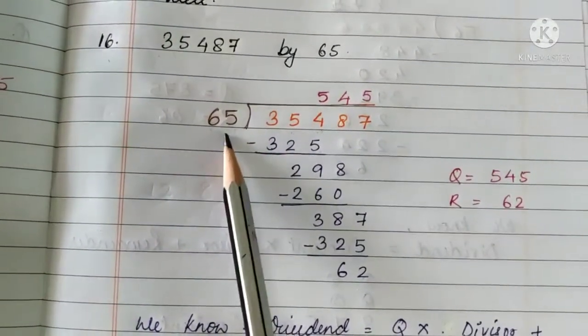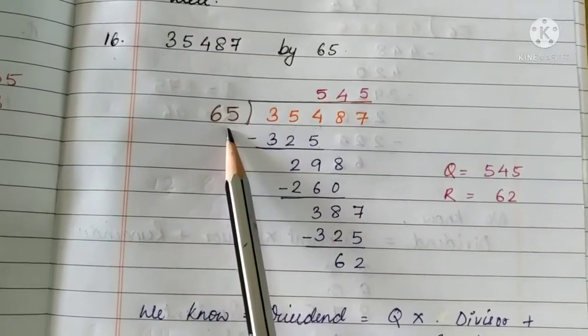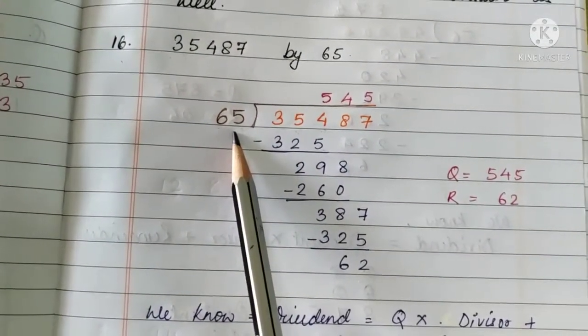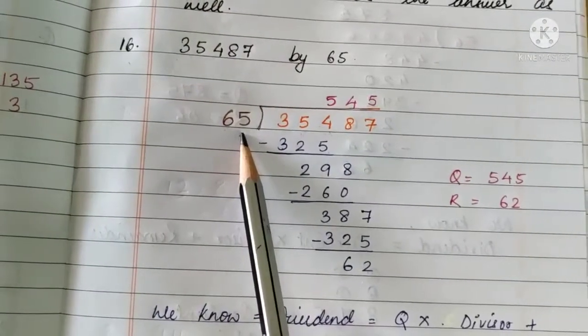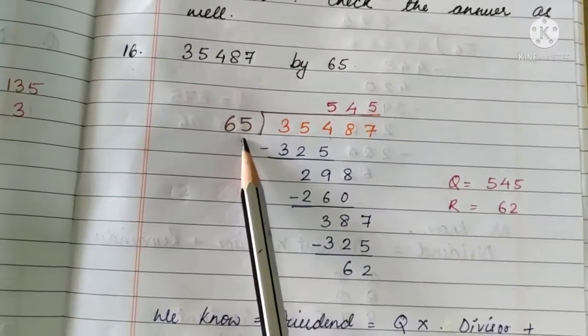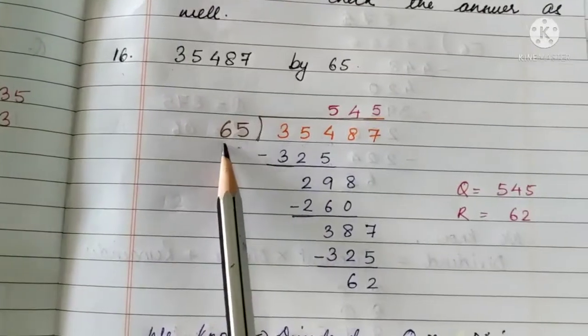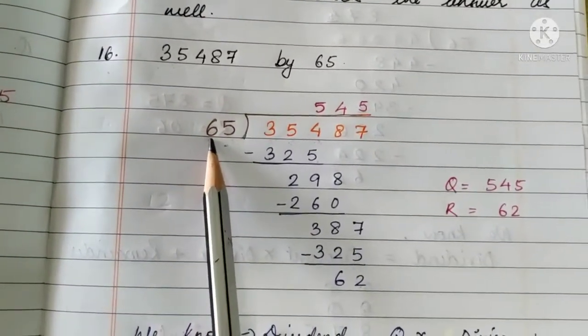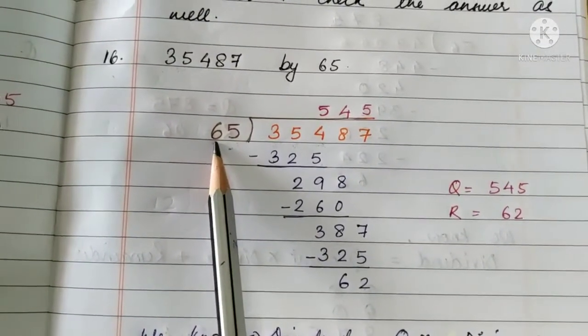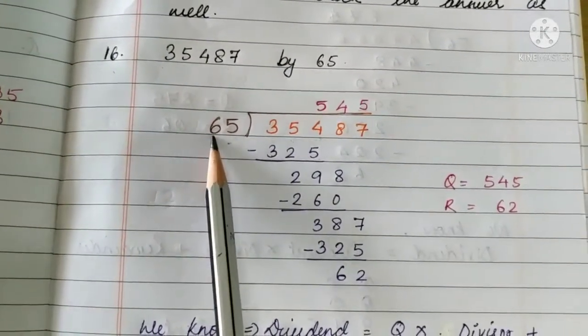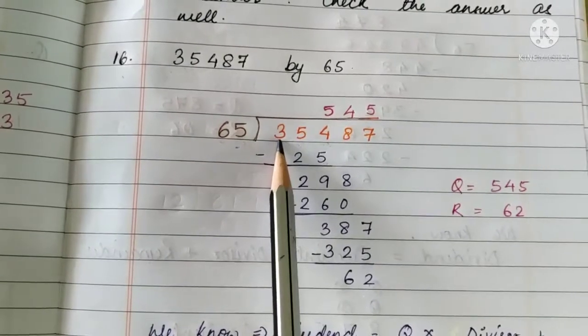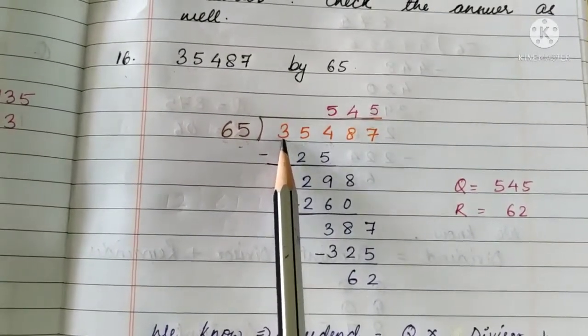Now, as the divisor is getting bigger, it is impossible for you to remember the table. Let me tell you a trick. Look at this digit of the divisor, that is, at the tens place: six. So, just try to recall the table of 6 and the first digit of the dividend is 3.